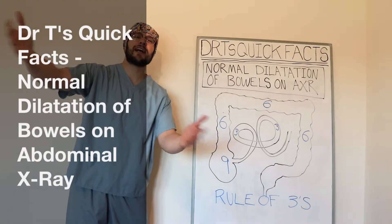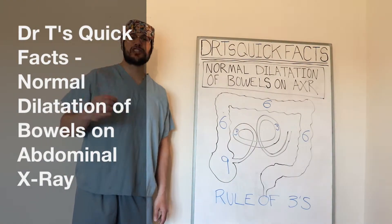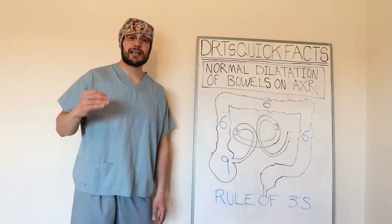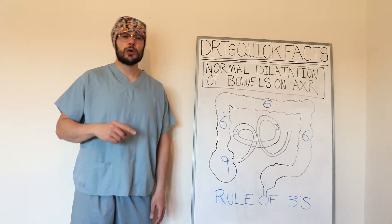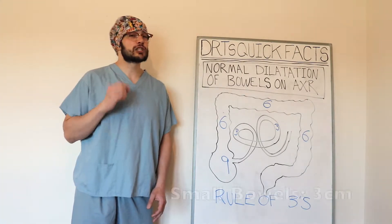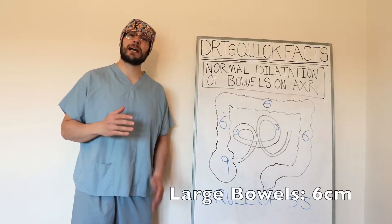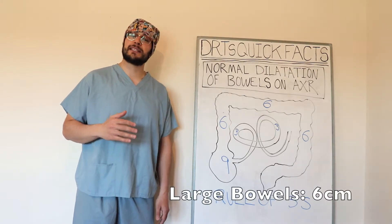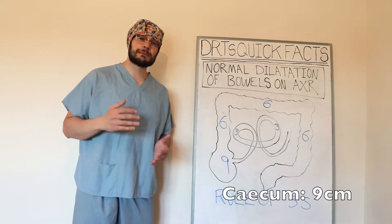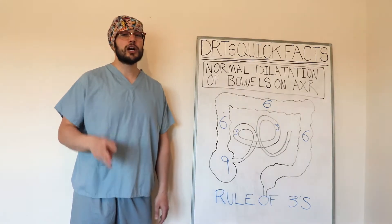Hello and welcome to this week's facts. Today we're going to cover the normal dilation of bowels on abdominal X-rays, and for this we're going to use the rule of threes. The small bowel is a maximum of three centimeters, the large bowel a maximum of six centimeters, and lastly the cecum a maximum of nine centimeters. Remember the rule of threes.